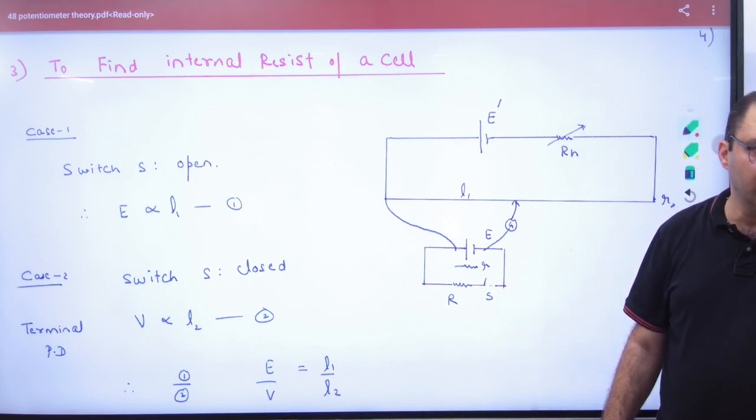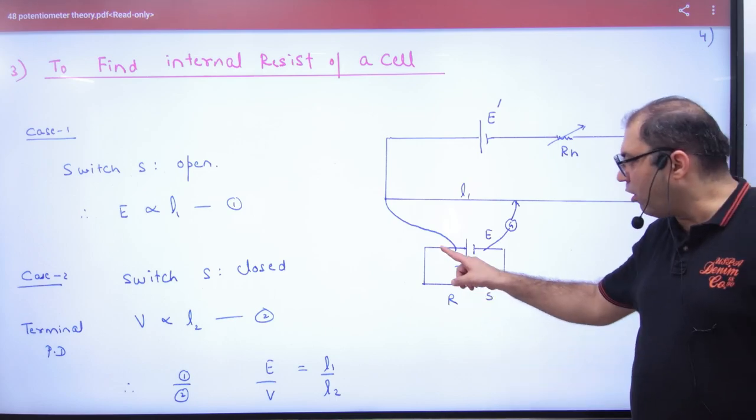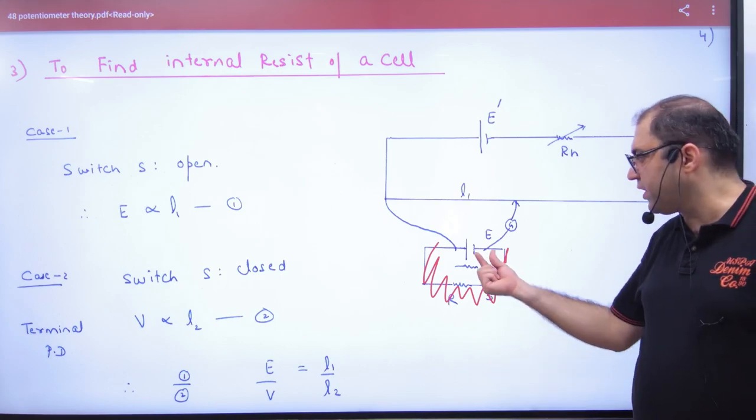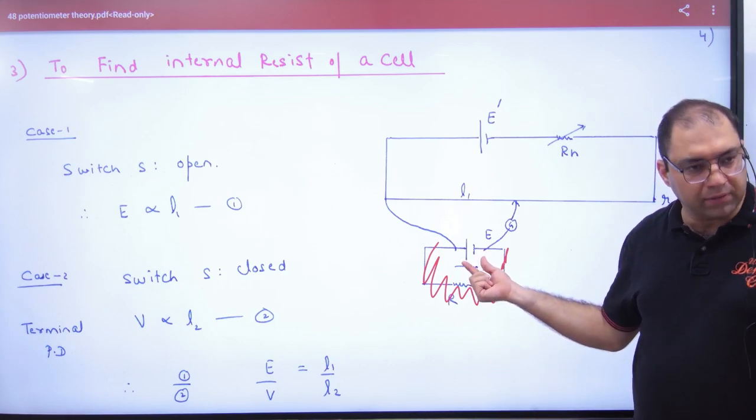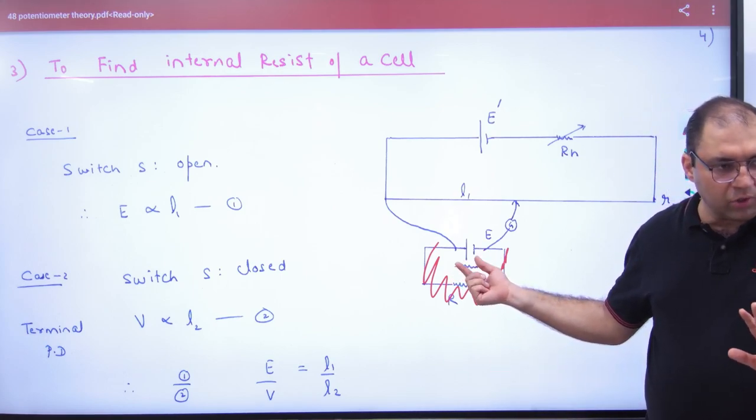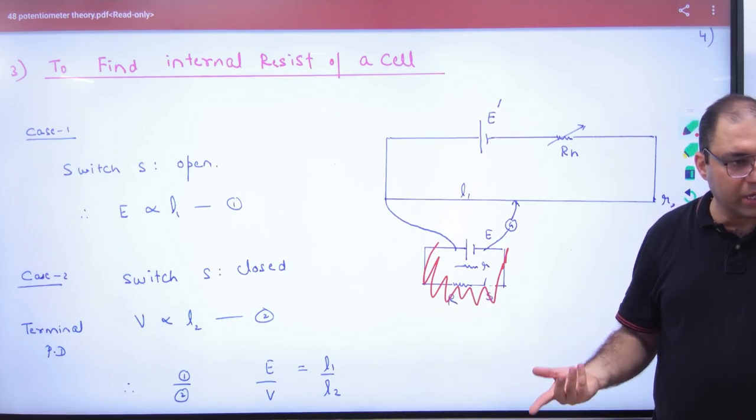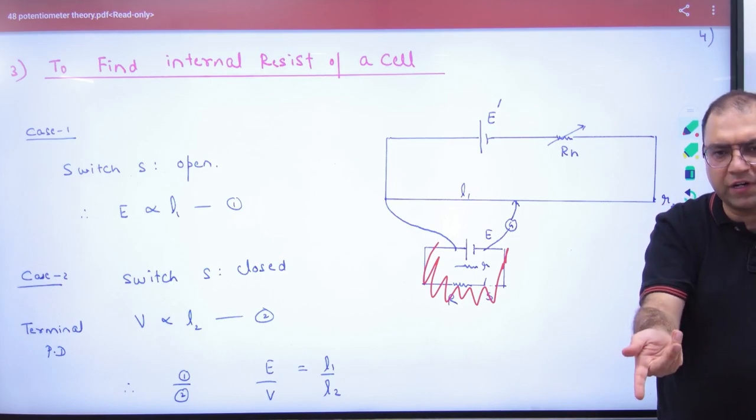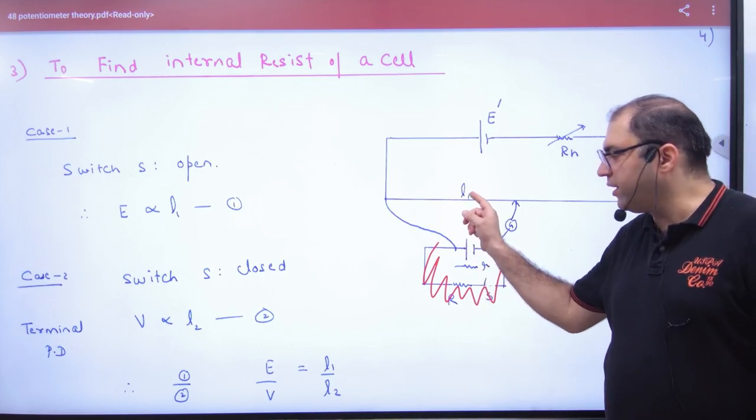I have not closed it, and if I have not closed it then obviously there is no current in it. In short, I have just put the battery E. So the battery E, because the current is not coming out, the circuit is open, so there is no potential difference. So E, what is the balancing length? L1.